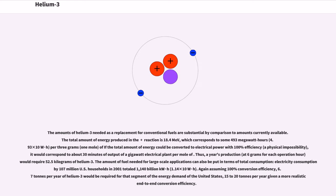The amounts of helium-3 needed as a replacement for conventional fuels are substantial by comparison to amounts currently available. The total amount of energy produced in the D-He3 reaction is 18.4 MeV, which corresponds to some 493 megawatt hours for 3 grams, 1 mole, of He3. If the total amount of energy could be converted to electrical power with 100% efficiency, a physical impossibility, it would correspond to about 30 minutes of output of a gigawatt electrical plant per mole of He3. Thus, a year's production would require 52.5 kilograms of helium-3.